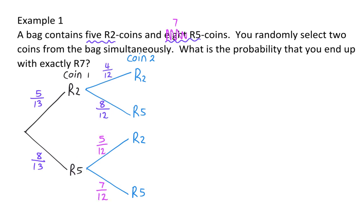Now that our tree diagram is completed, we can go back to the question. We are asked what the probability is that you end up with exactly seven rand. To have seven rand, you need to remove a two-rand and a five-rand, or a five-rand and a two-rand. To determine the probability of following one route, you need to multiply the probabilities on that route. So to remove a two-rand is five out of thirteen, multiplied by a five-rand of eight out of twelve.